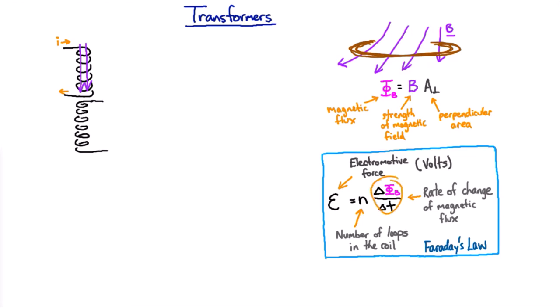And if you have a changing magnetic flux, then you're going to induce an electromagnetic force or voltage in the second coil because the second coil is sharing that magnetic field. That magnetic field is going to come out here and it's going to induce a voltage in that second coil.